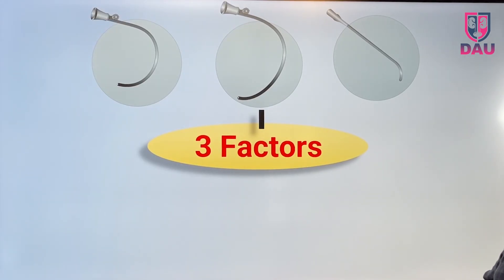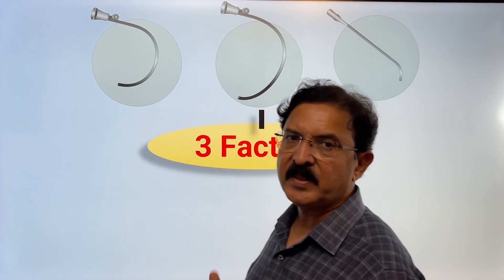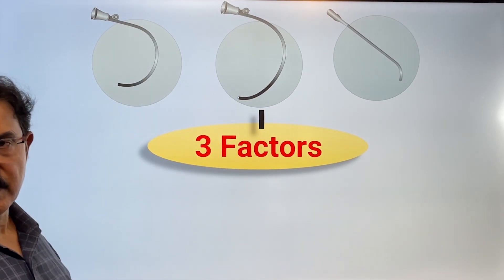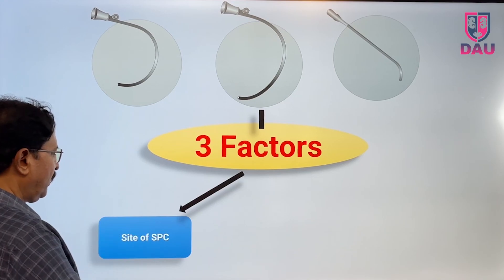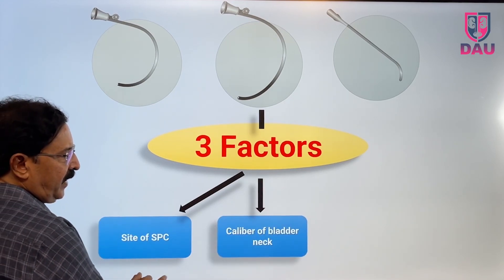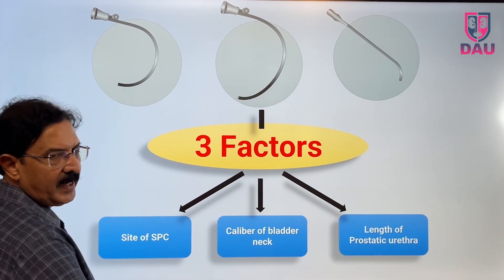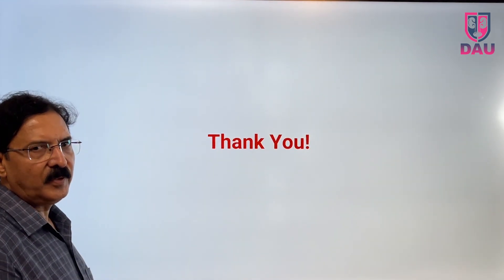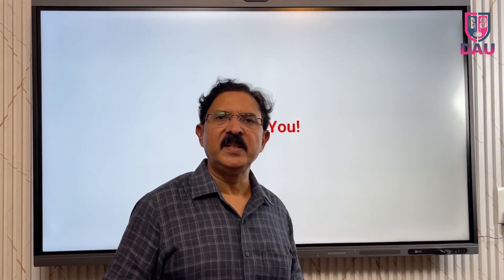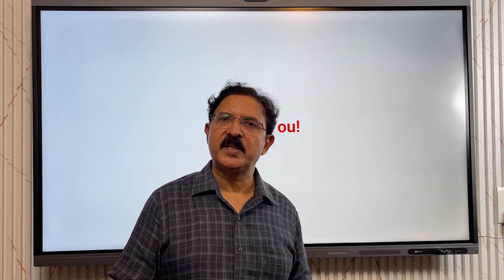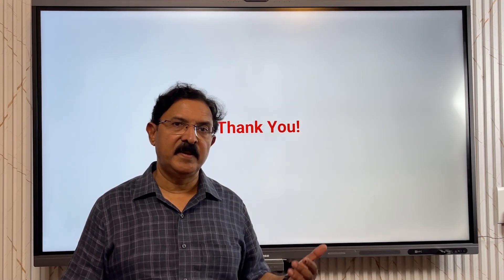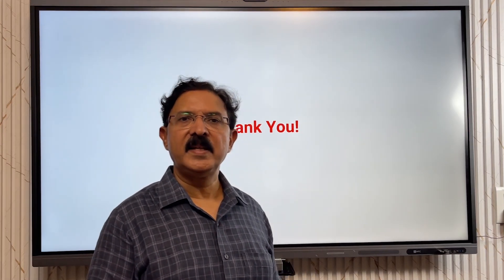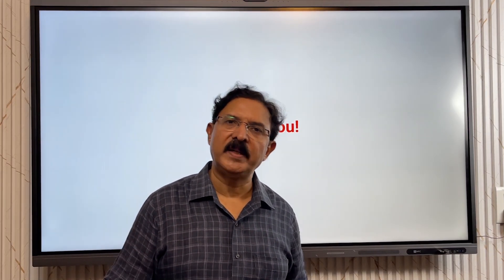So friends, when you have to make a selection from these bougies, these three factors are crucial: first, the site of the SPC; second, the caliber of the bladder neck; and third, the length of the prostatic urethra. Please assess them carefully, and with gradually increasing experience, you will be able to decide before the surgery which is the best bougie for that case. Thank you very much for your patient listening. If you have any comments, please write to me on my email. Thank you.